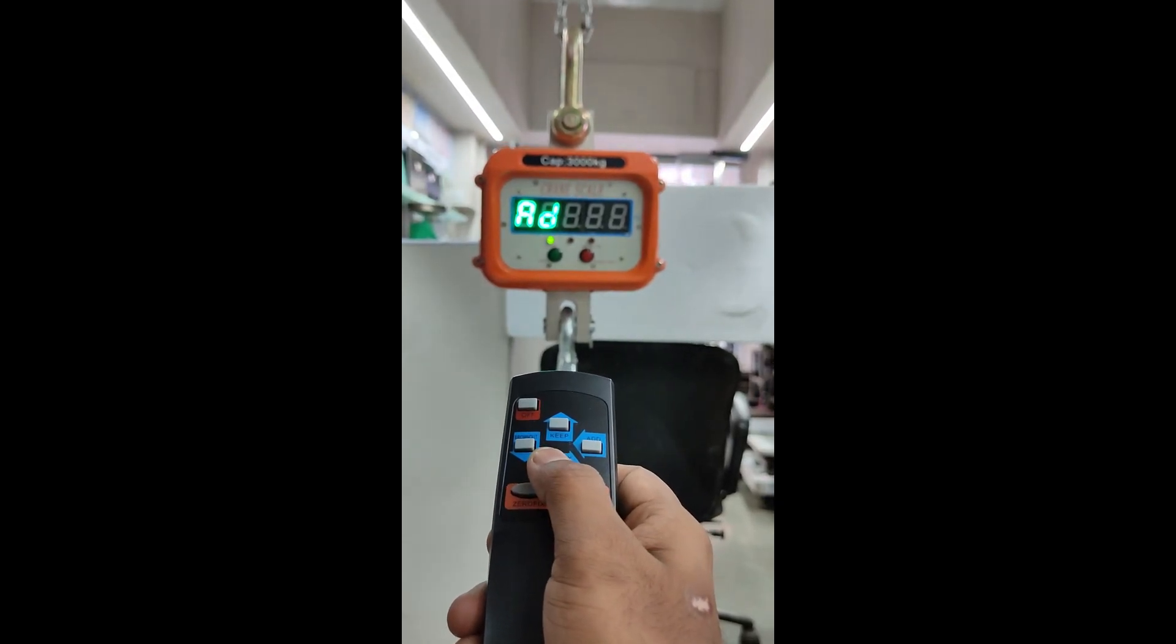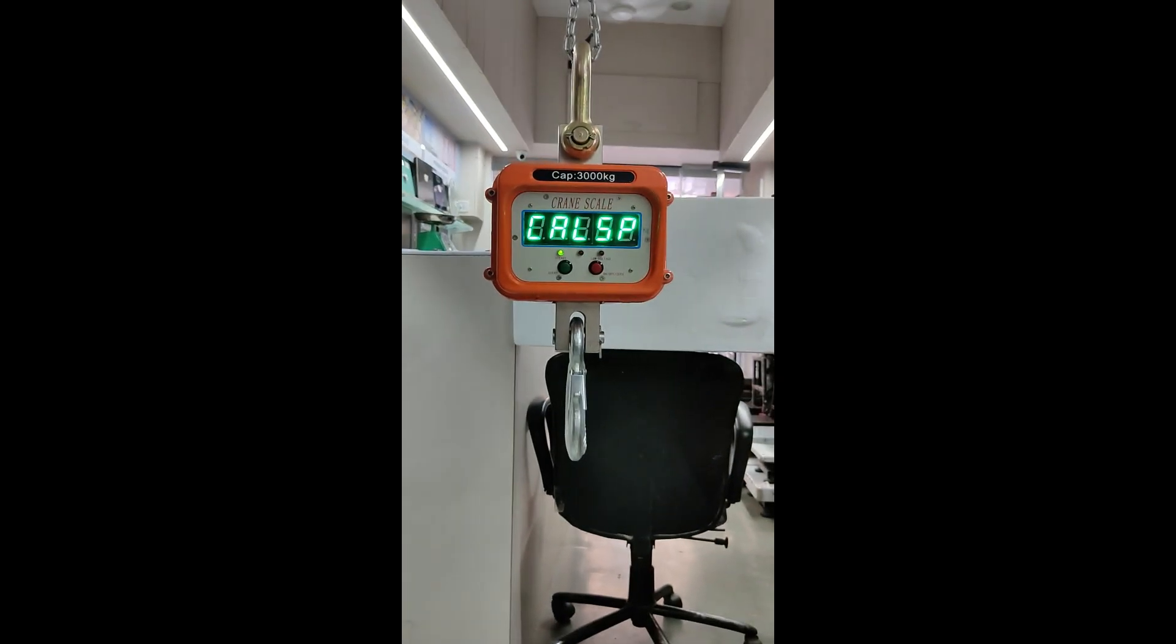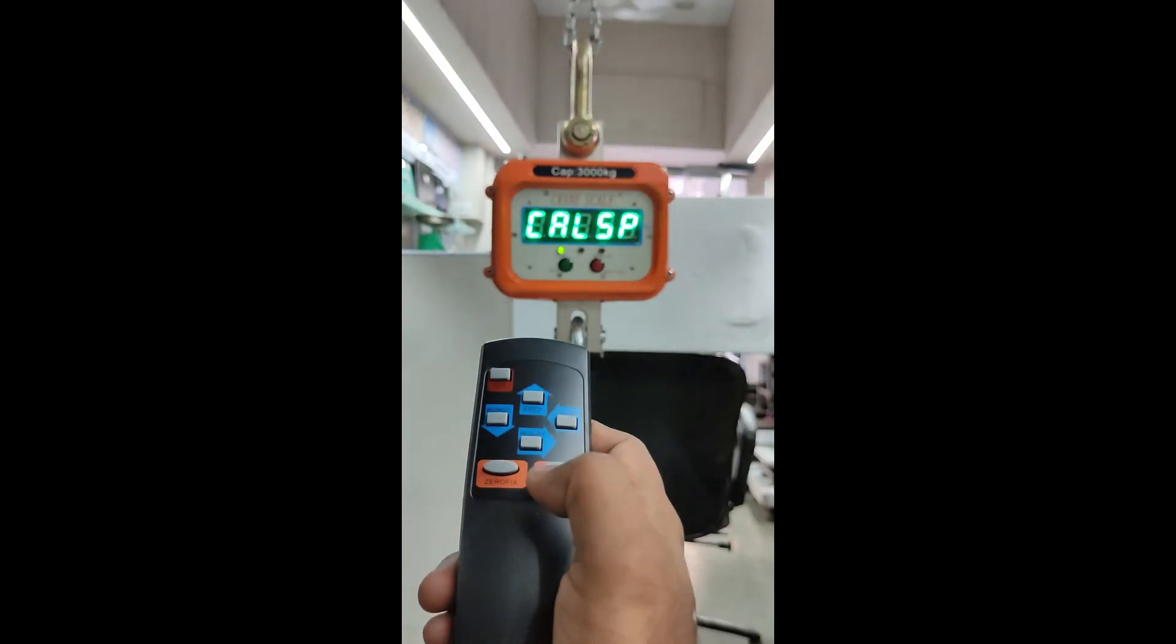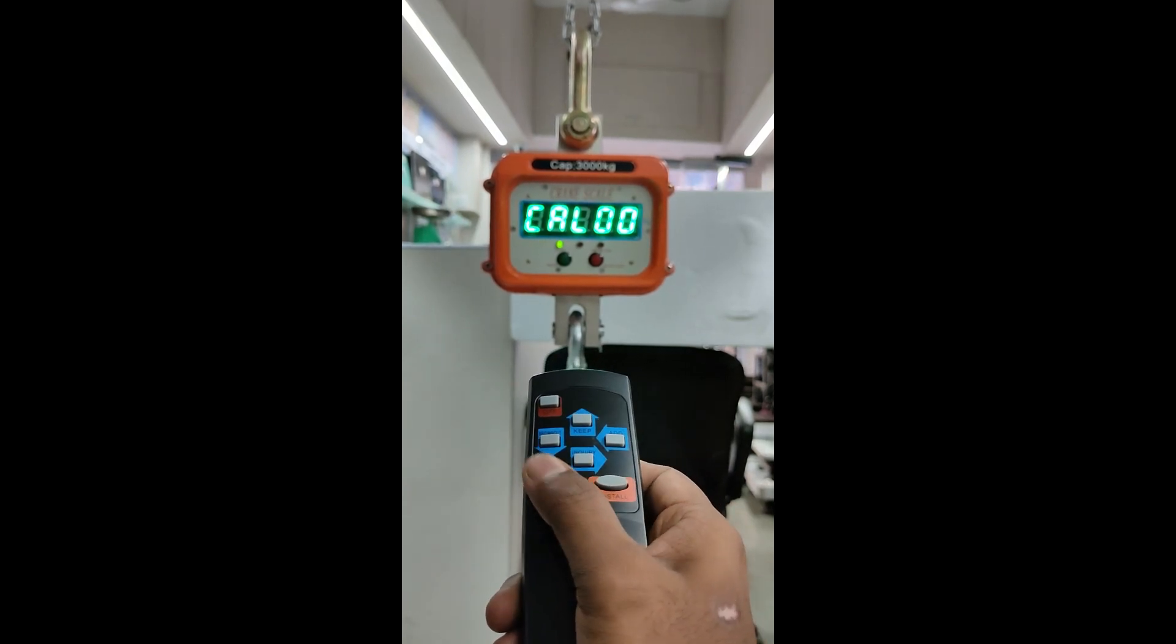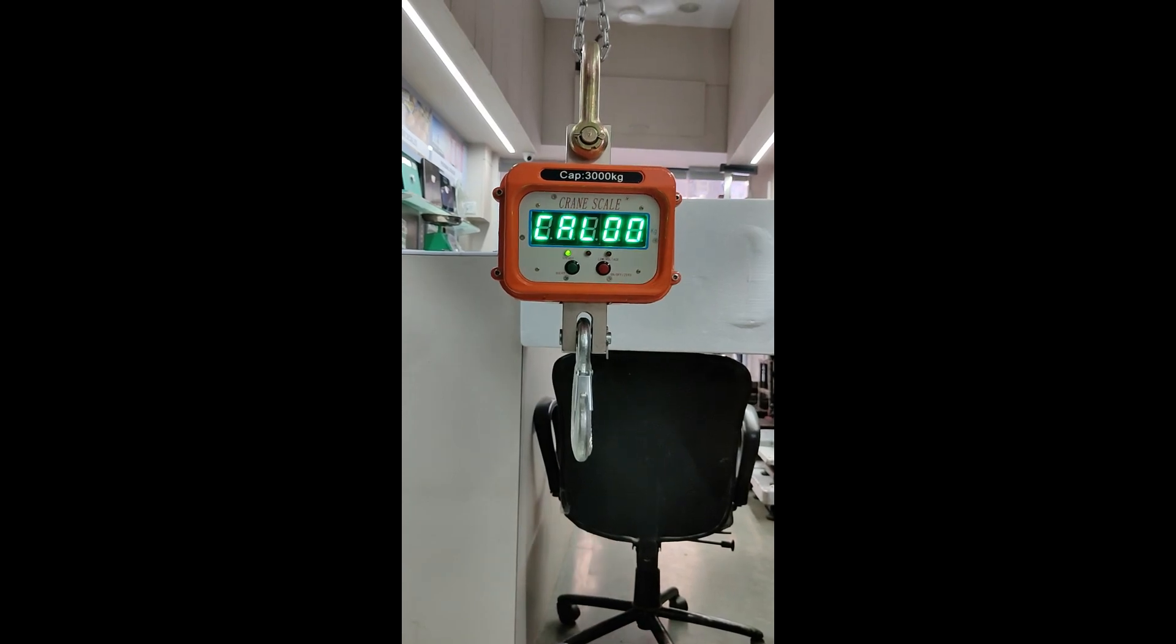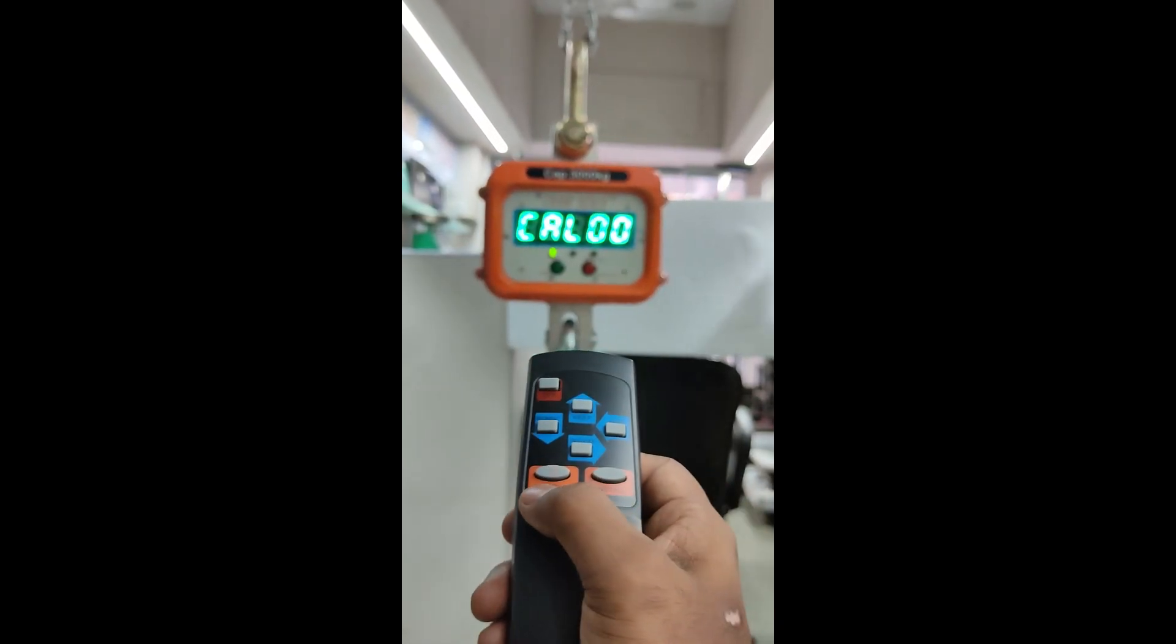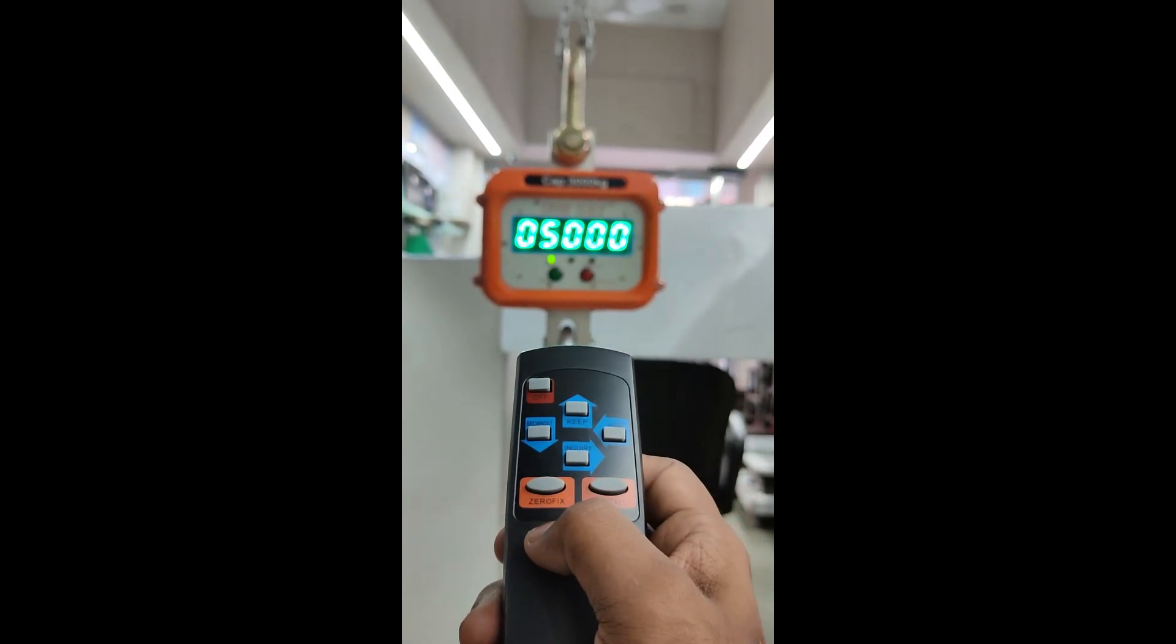Press the upside arrow button. The display will show 'cal sp'. To enter calibration, press the zero button. The display will show 'cal zero'. Press the zero button again, and the display will blink showing a weight value.